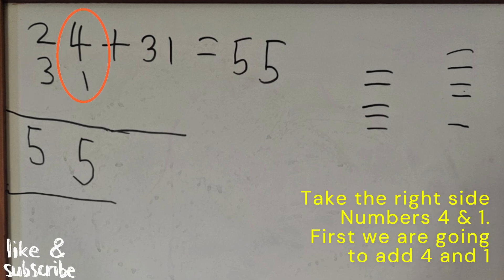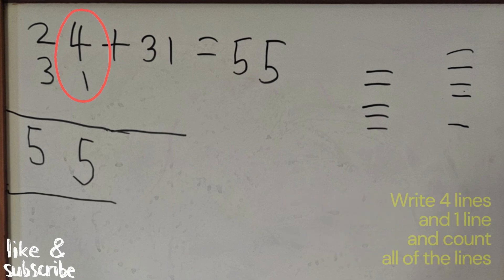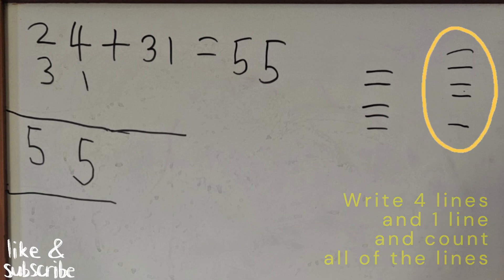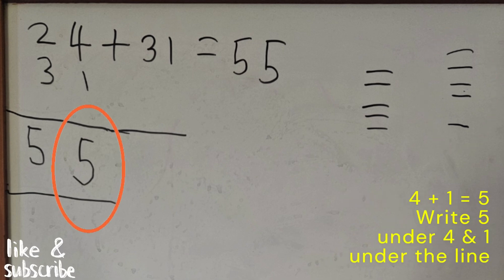Take the right side number first, which are 4 and 1. First, we are going to add 4 and 1. So write 4 lines in one line. Count all of the lines. 4 plus 1 equals 5.